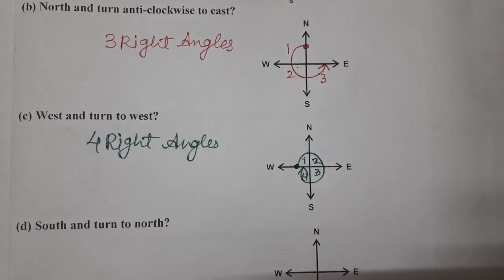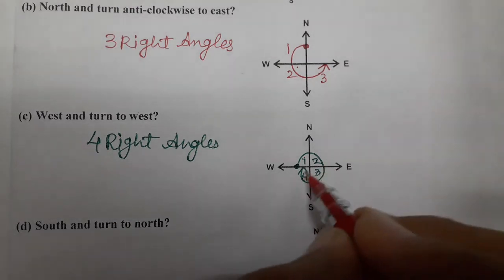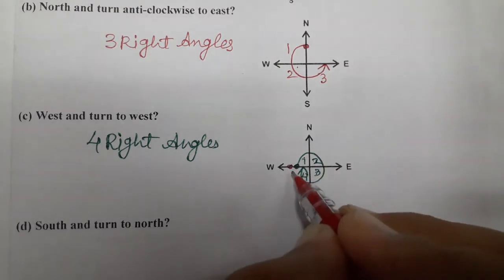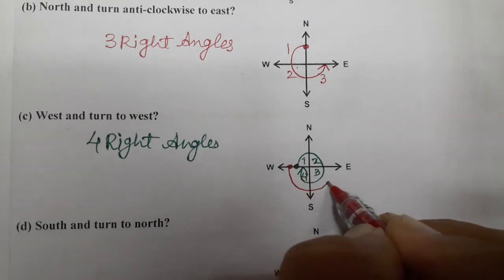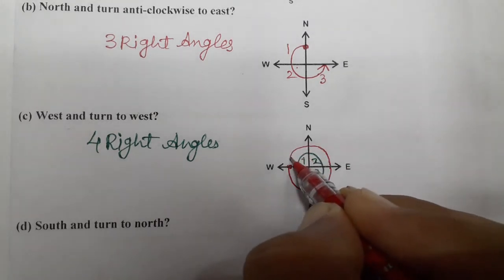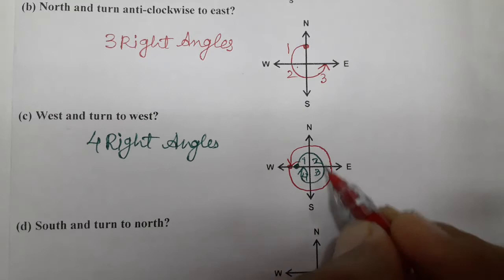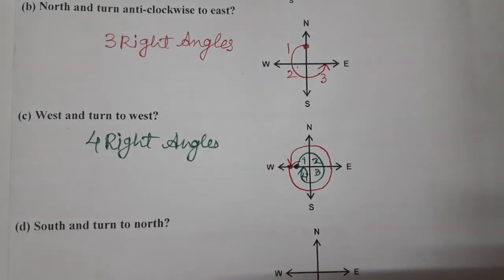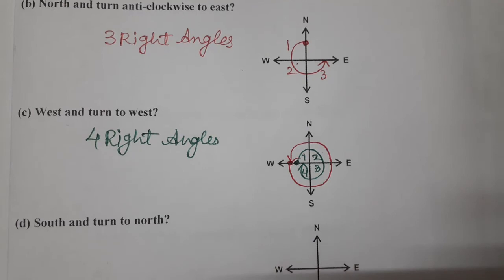And if you move in anti-clockwise direction, also see, we will get the same result. One, two, three, four. So whether clockwise or anti-clockwise, we will get the same four right angles.